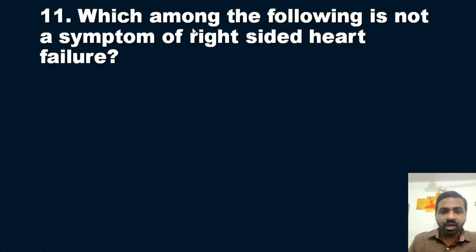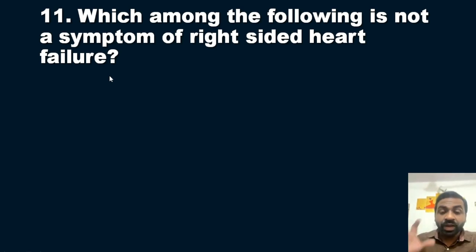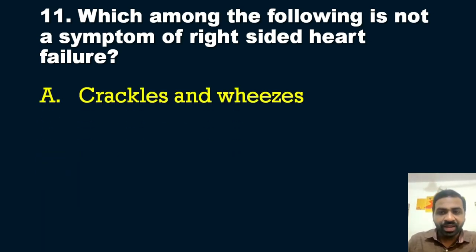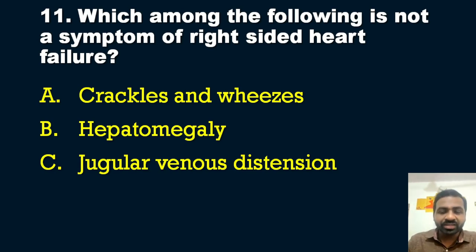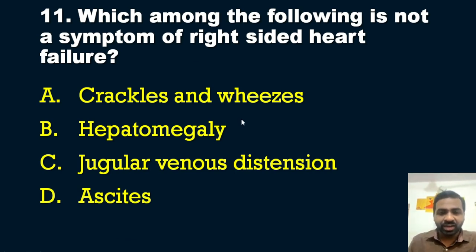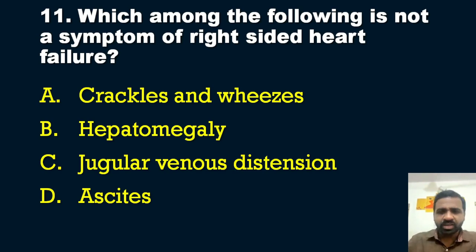The eleventh question: which among the following is NOT a symptom of right-sided heart failure? Options: A — crackles and wheezes, B — hepatomegaly, C — jugular venous distension, D — ascites. The answer is option A — crackles and wheezes are a symptom of left-sided heart failure, not right-sided.